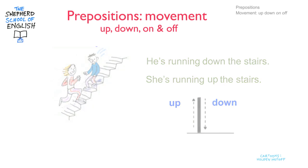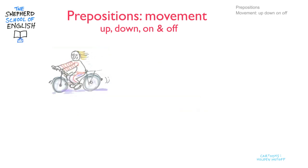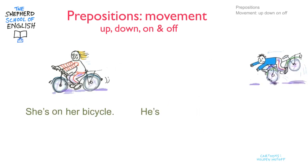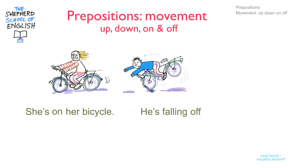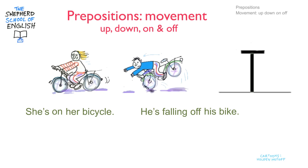Here's the second picture. Same girl again — this time she's on her bicycle. And here comes the boy, he's falling off his bike. She's on the bike, he's coming off the bike. And here's the diagram with on and off.